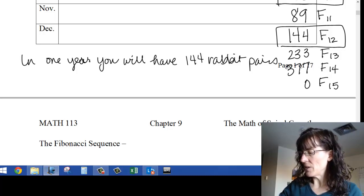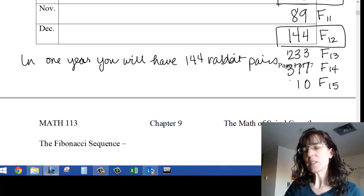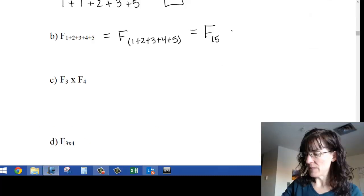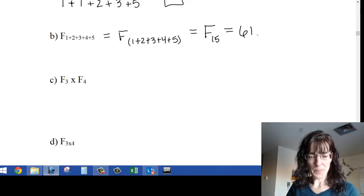Add these again, I get 10, 11, and so now I have a 6, so 610 for F sub 15. 610.